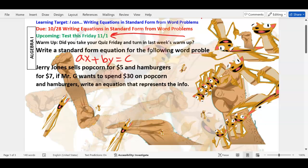Maybe tomorrow we'll get some mixed practice, but for today we're working on finishing that assignment, missing work, and corrections. Let's read the warm-up. Jerry Jones sells popcorn for five dollars and hamburgers for seven dollars. How many items is that? Two items: hamburgers and popcorn.